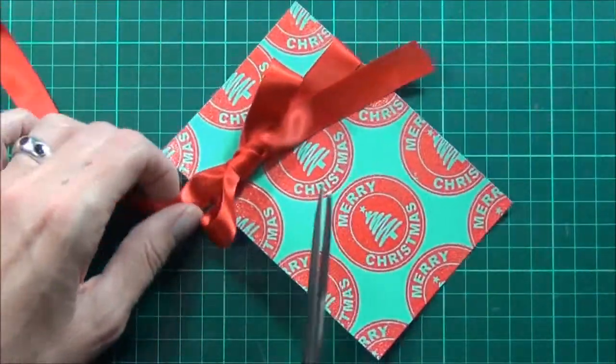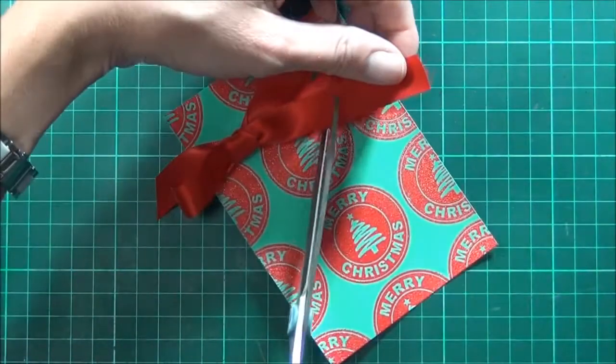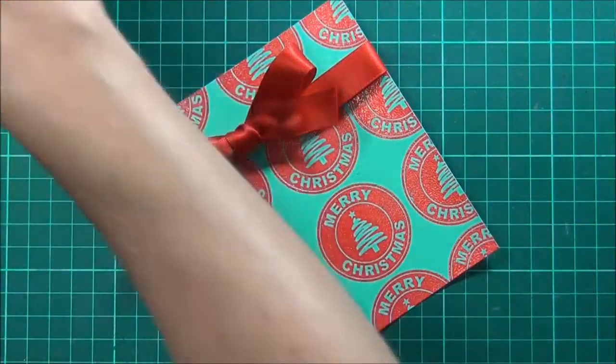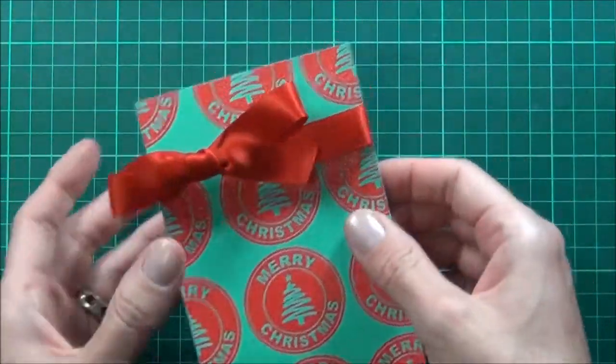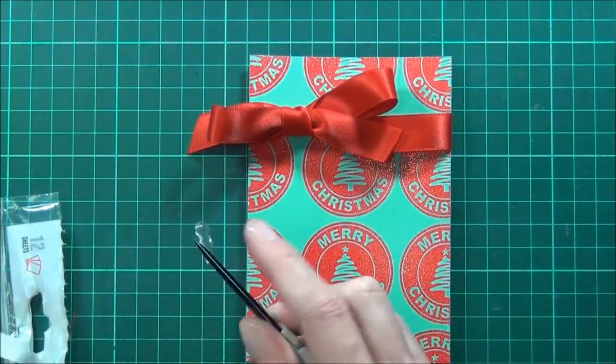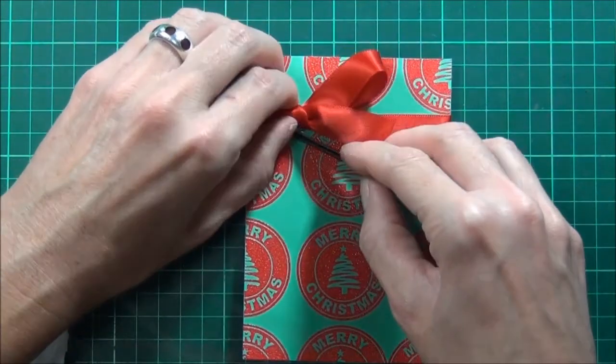I have a separate pair of scissors that I use for cutting ribbon and I make sure not to use these to cut any paper products at all as that can make them go blunt. I like to secure my bows with glue dots, but you could use something like glossy accents, but just be aware it might take a bit longer to dry.